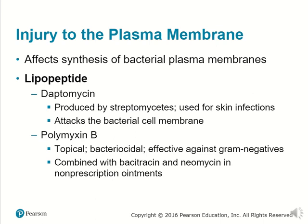Those that cause injury to the plasma membrane affect the synthesis of bacterial membranes. Examples include lipopeptides like daptomycin, produced by streptomycetes, used for skin infections, attacking the bacterial cell membrane. There's also polymyxin B, which is also topical, bactericidal — it will kill the bacteria and is effective against gram-negative organisms. It can be combined with bacitracin and neomycin in non-prescription ointments.